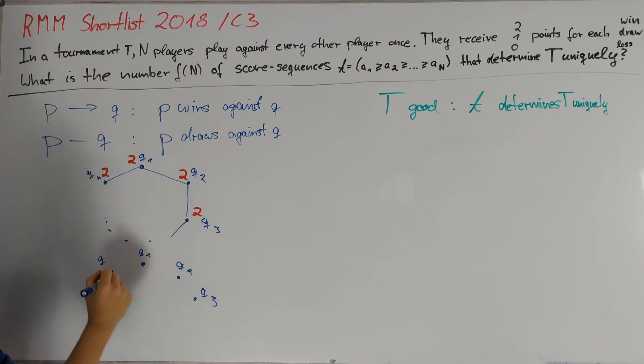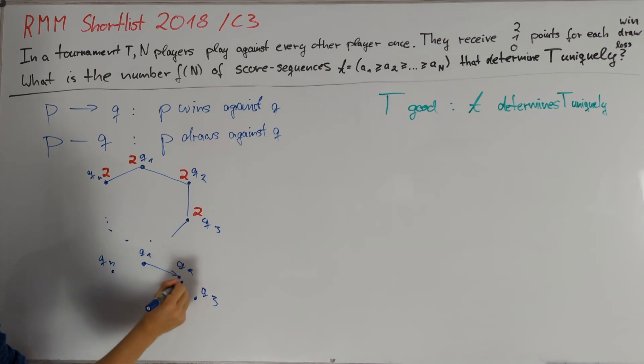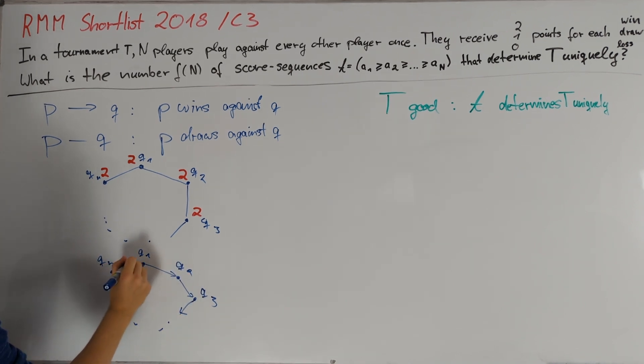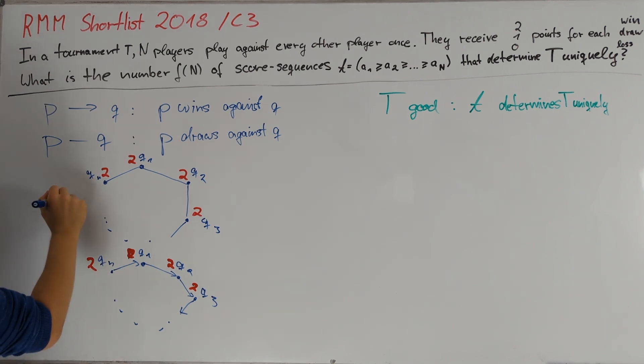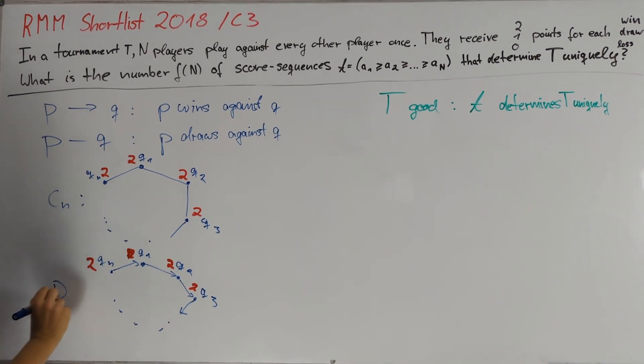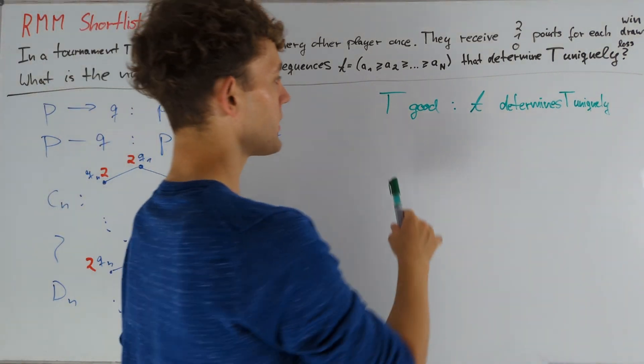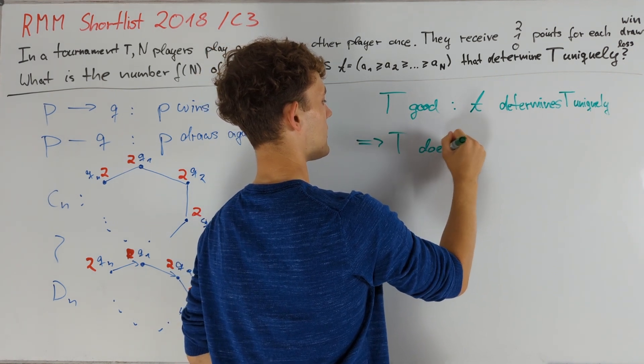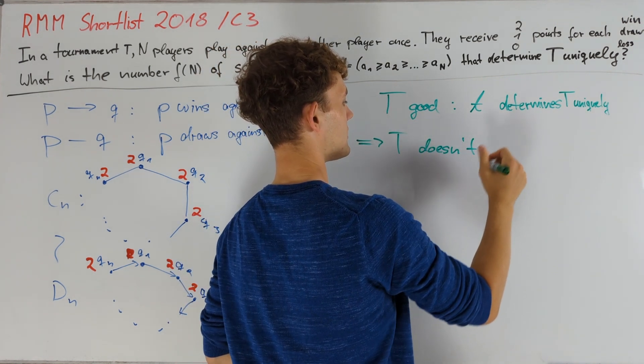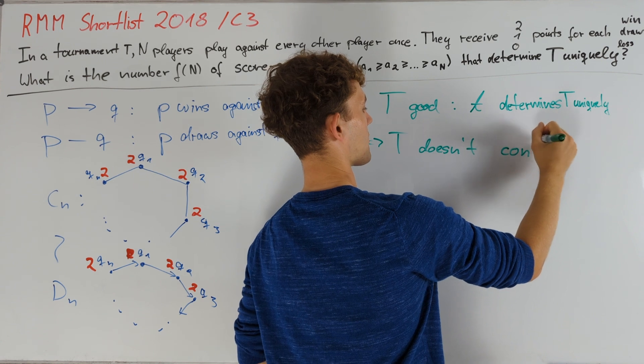Now if our players Q1, Q2 all the way up to Qn form a directed cycle, in other words we assume that Qi always wins against Qi+1, then we are going to have the same score sequence where each player receives precisely two points within this sub tournament. So if we denote this cycle by Cn and the directed one with Dn, then all of this tells us that if we have a good tournament T, then T doesn't contain Dn or Cn for n greater than or equal to 3.